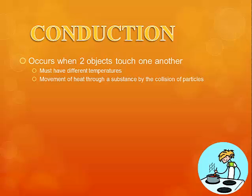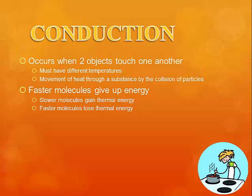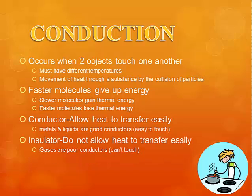If you touch a cold object, heat transfers from your hand to the colder object. This happens through collisions — as the particles of the two objects collide, they transfer energy. The faster molecules give up energy and lose thermal energy, while the slower molecules gain that thermal energy until they reach equilibrium. Conductors are substances that allow heat to transfer easily; insulators impede the heat transfer — they slow it down but don't stop it. Metals and liquids tend to be good conductors because particles are close together, while gases are poor conductors because their particles are far apart.